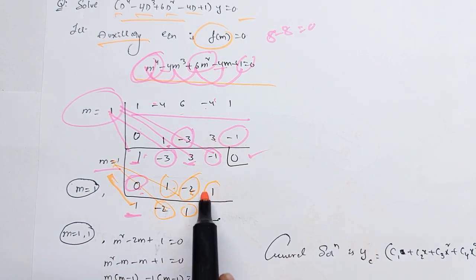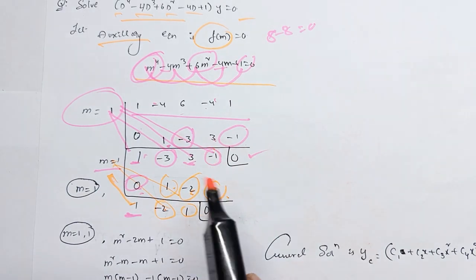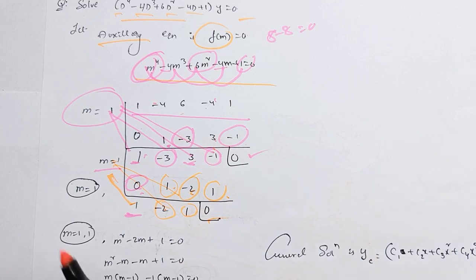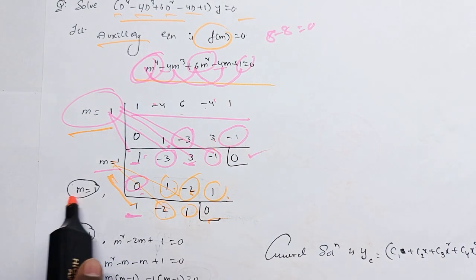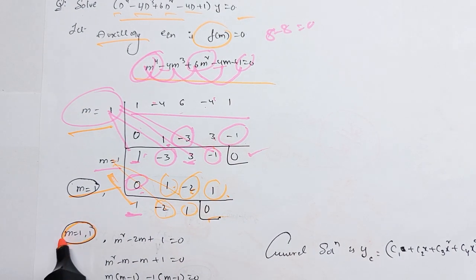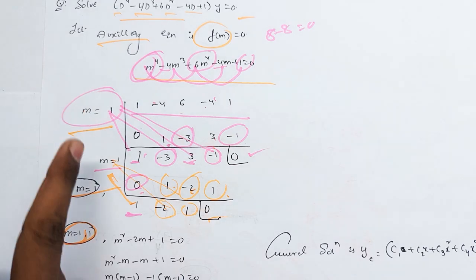1, 1 is 1. Minus 1 plus 1 is 0. So, if you want to get m is equal to 1, 1. m is equal to 1, 1. Two out of the way.